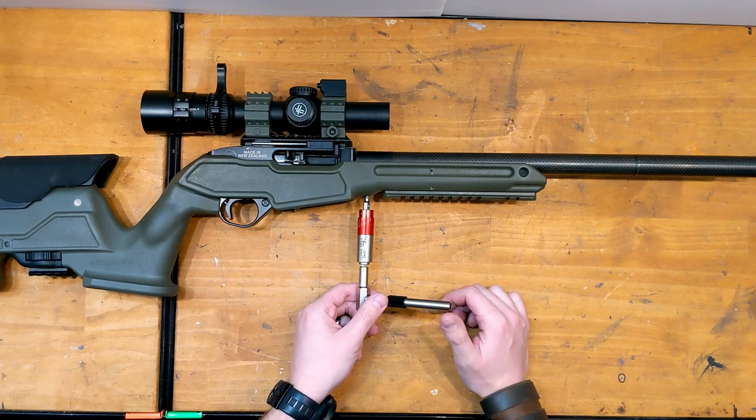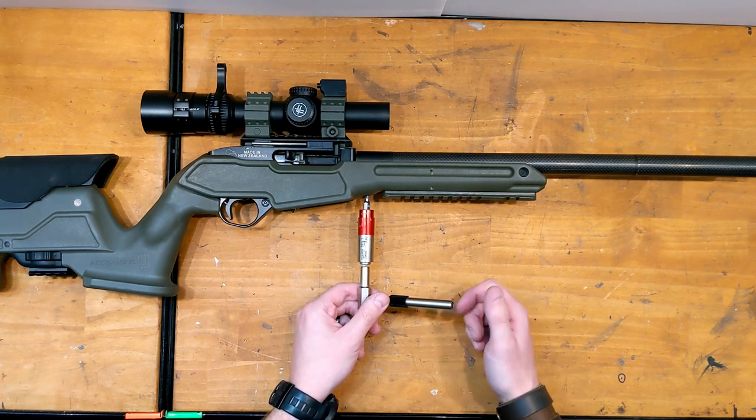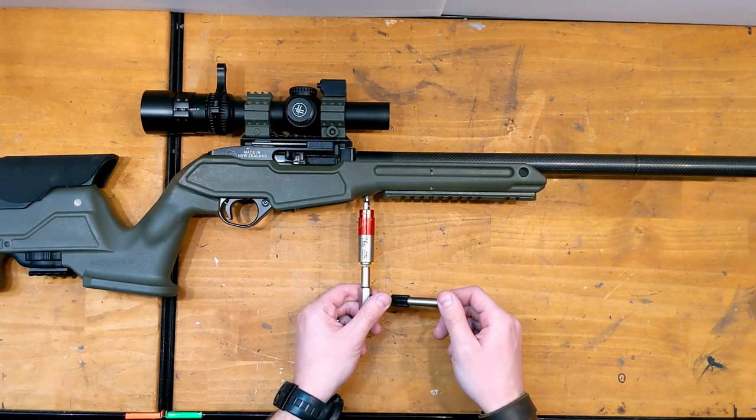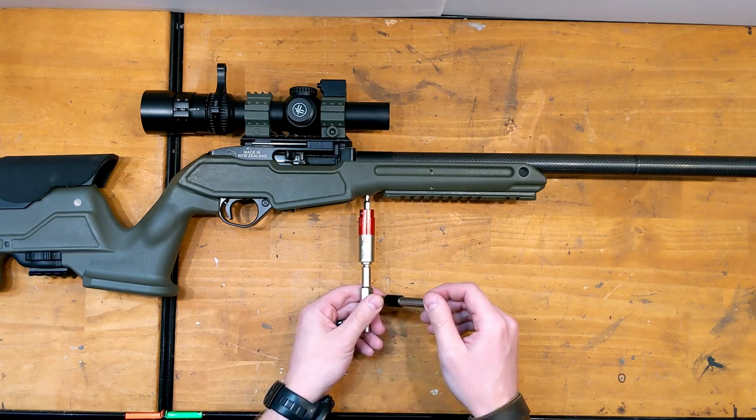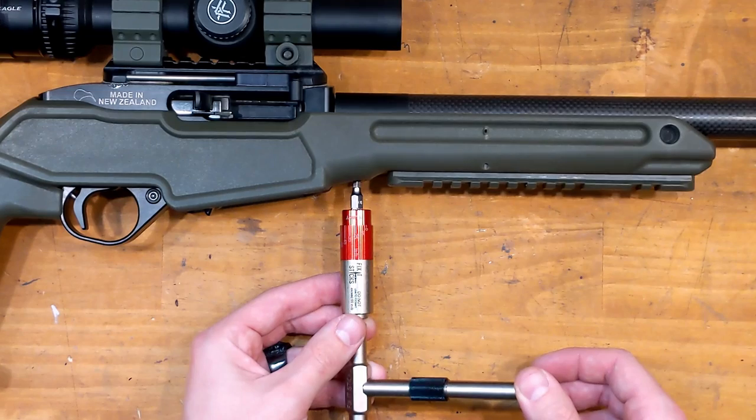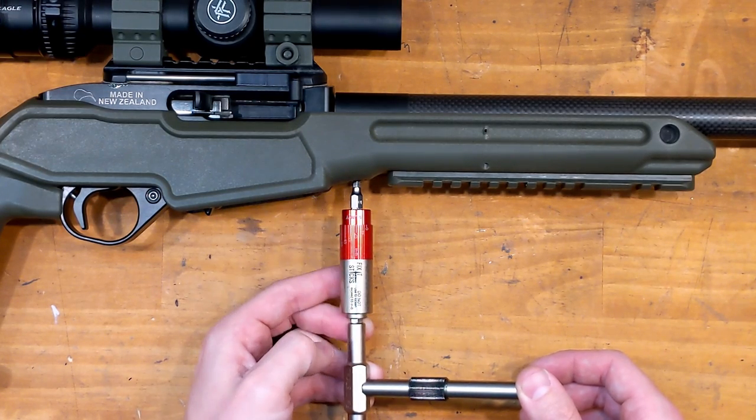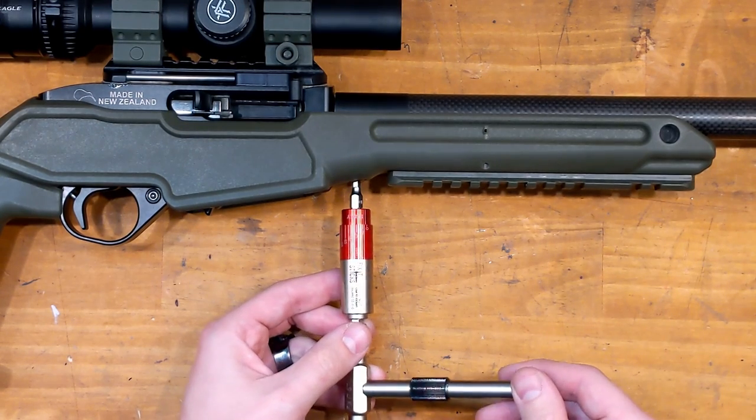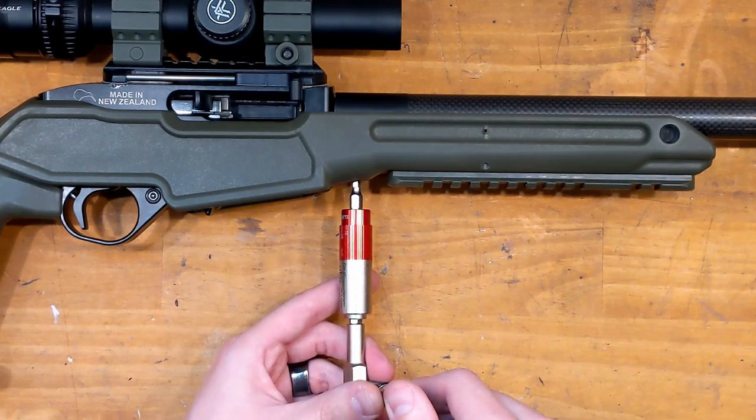So all I'm going to do is dial it in here. Now I actually use 25 inch pounds. Ruger recommends 20, but this is not a factory action - this is an aftermarket action as you can probably see by the made in New Zealand. So basically you're going to bring it around and I'm going to try and keep this in camera for you so you can actually see. You continually apply pressure and now you'll start to see that this collar is moving but the indicator is not. And I'm just going to keep going. I'm going to come back off it.